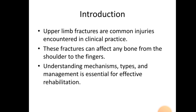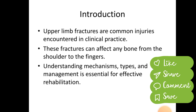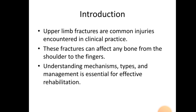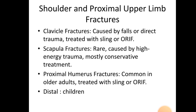Upper limb fractures are common injuries encountered in clinical practice. These fractures can affect any bone from the shoulder to the fingers. Understanding mechanisms, types, and management is essential for effective rehabilitation. Let's start with shoulder and proximal upper limb fractures.